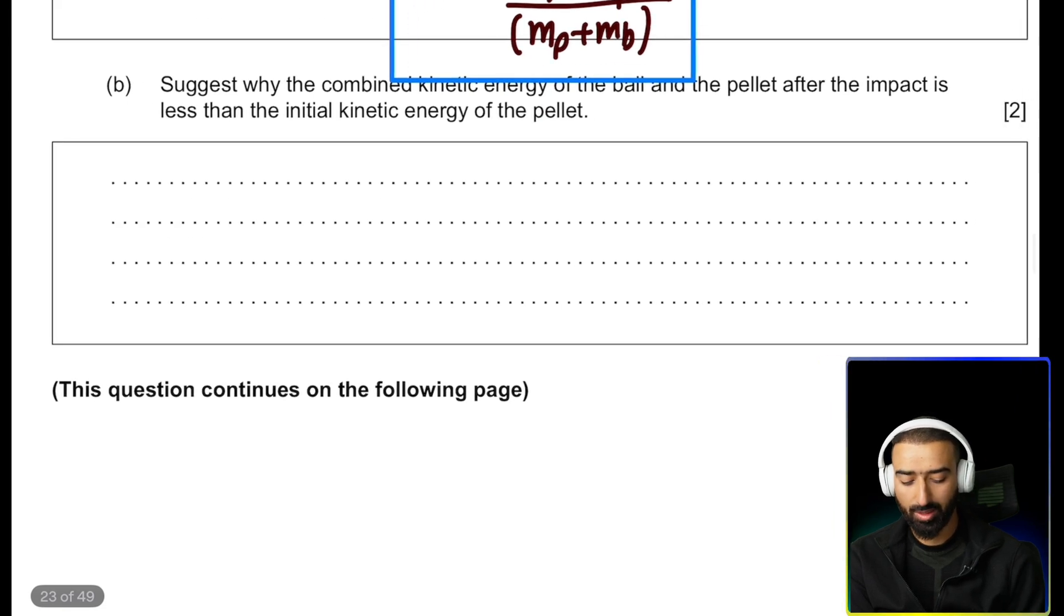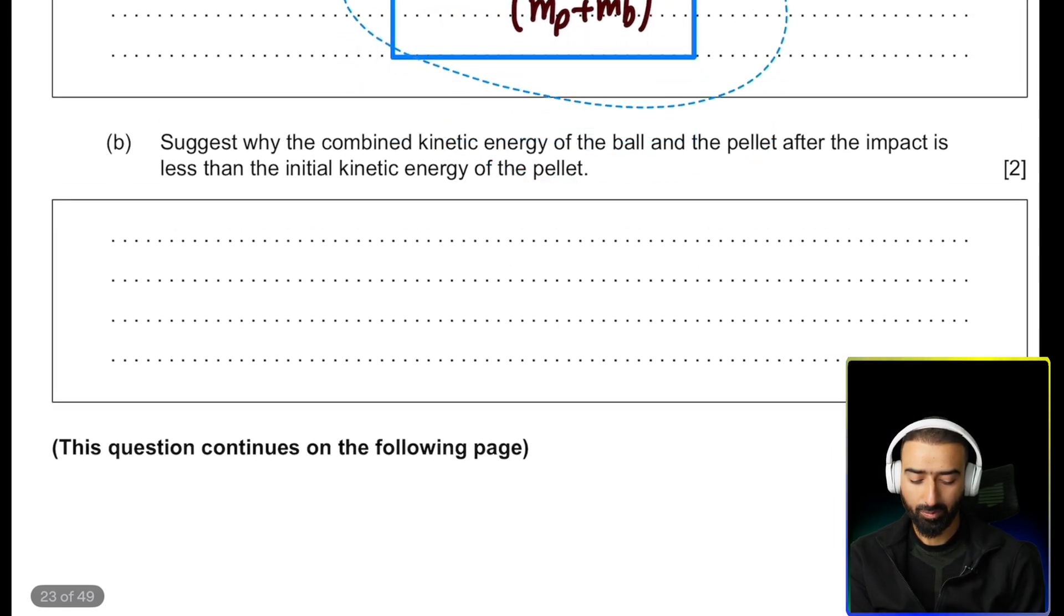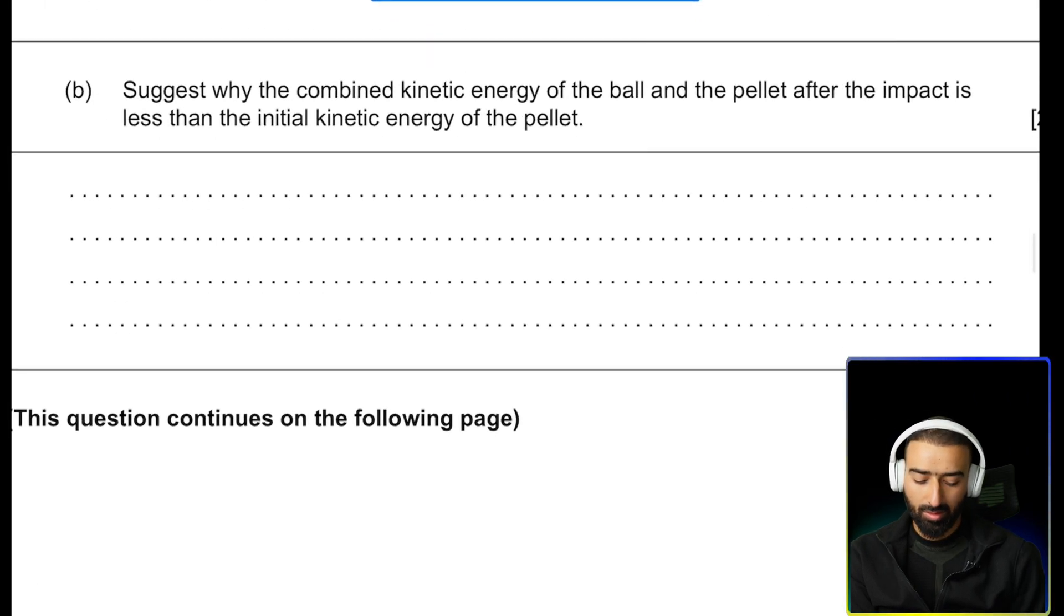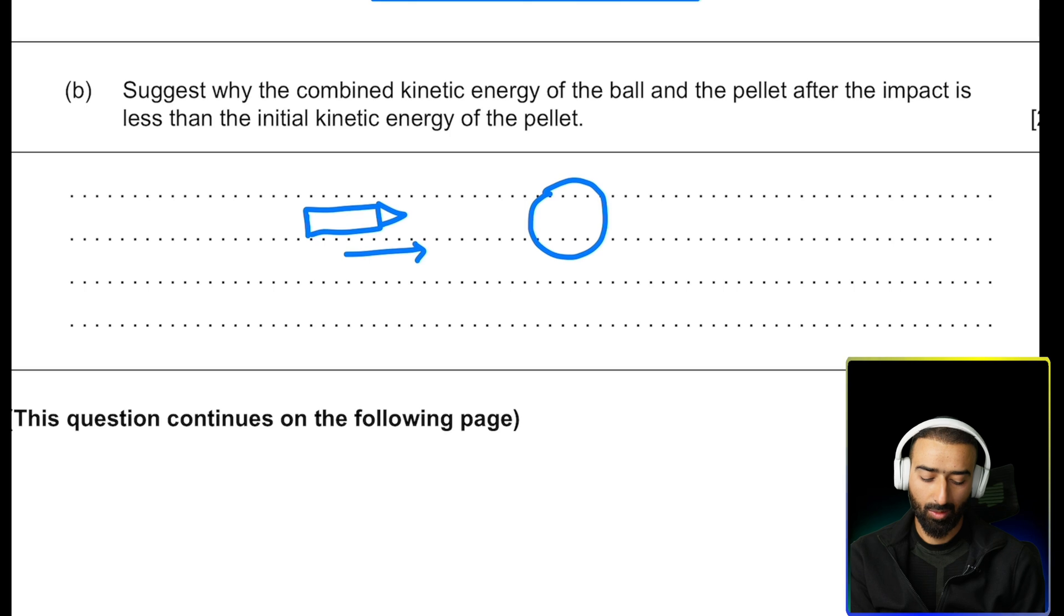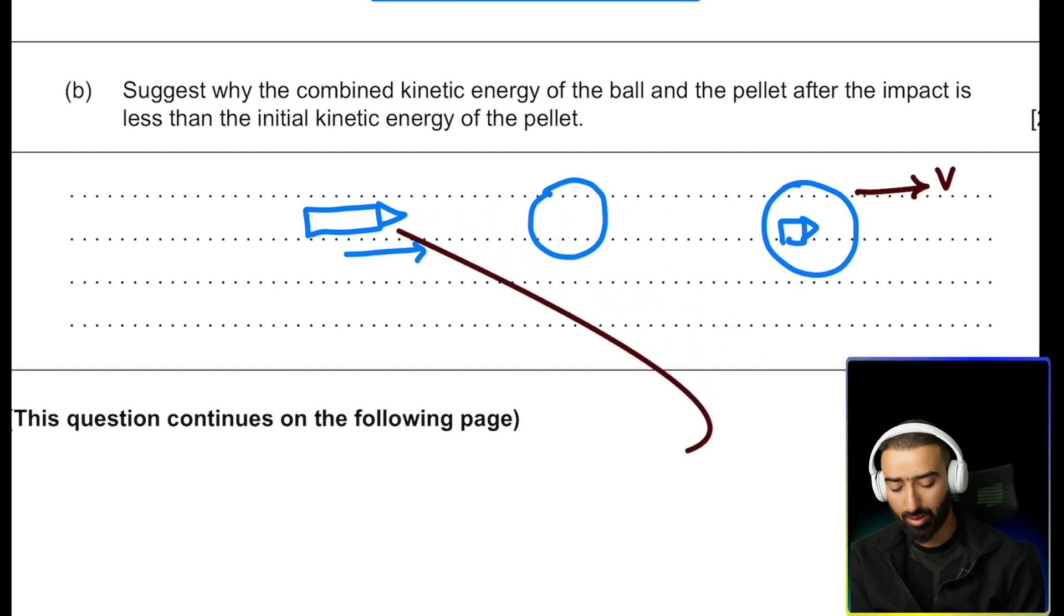Okay, let's move on to the second part of the problem. Suggest why the combined kinetic energy of the ball and the pellet after the impact is less than the kinetic energy it had before the collision. Why is that? The reason is that the initial kinetic energy of the pellet is moving towards the ball, it has some kinetic energy. And when it gets lodged into the ball and the combined system moves forward, the kinetic energy when it gets embedded of the system is less than the kinetic energy it had before the collision. Why is that?